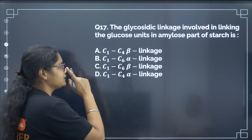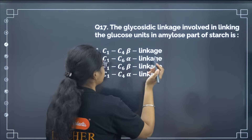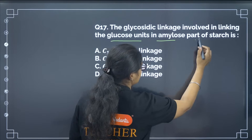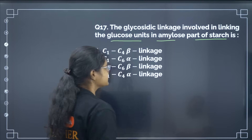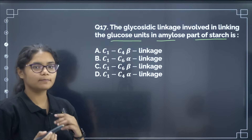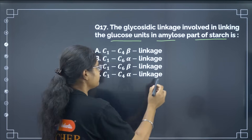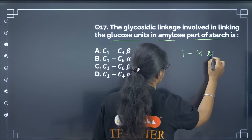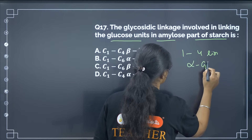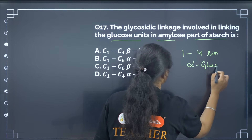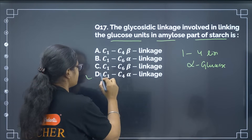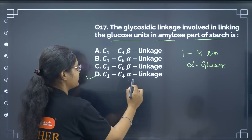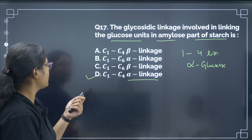The glycosidic linkage in glucose units in the amylose part of starch — amylose is a polysaccharide with 1,4 linkage of alpha glucose. The correct answer is option number D: C1-C4 alpha linkage.